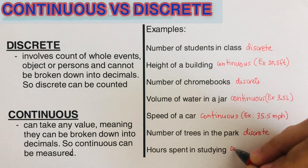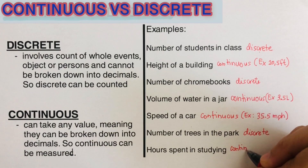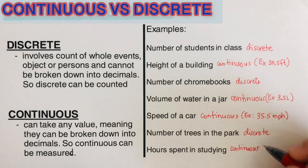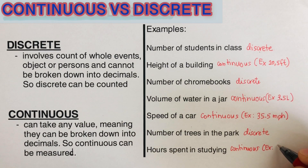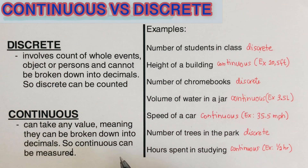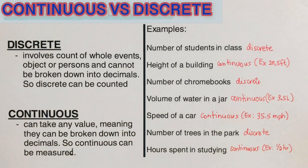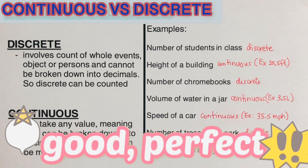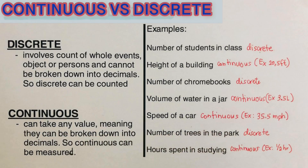Hours spent studying is continuous because it can be in decimals — for example, you studied half an hour, which is 0.5 hours. So pretty much, discrete involves whole numbers while continuous can be expressed in decimals or fractions as well.